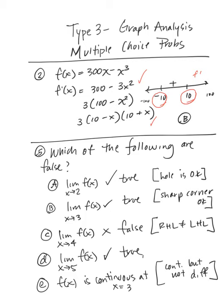In number 5, we're asked about which one of the following are false. Going through each of the choices: the limit of f of x as x approaches 2 is true — a hole is okay. Part B, the limit of f of x as x approaches 3 is also true; sharp corners are okay for limits. In choice C, the limit as x approaches 4 of f of x — this is false. It does not exist because the right-hand limit doesn't equal the left-hand limit. In part D, the limit as x approaches 5 exists, and the function is continuous at x equals 3, continuous but not differentiable.